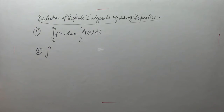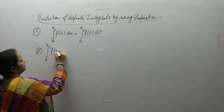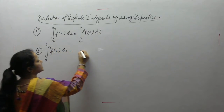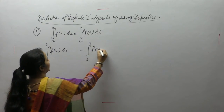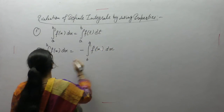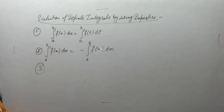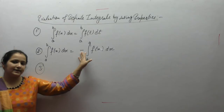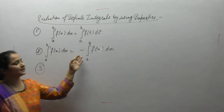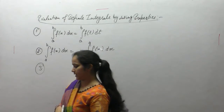The second property is: integral of a to b of f(x) dx is equal to minus the integral of b to a of f(x) dx. If we reverse the order of limits, the order of integration changes and it will take a negative sign. So if the order of integration is reversed, a negative sign appears.